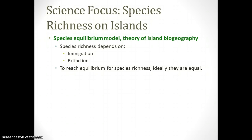You tend to see more extinction on islands because there is nowhere to move if situations get bad. Remember, if you are out-competed you have three options: adapt, move, or die. On an island, you don't have many options for moving, so extinction becomes much more likely. To reach equilibrium, the number of incomers and extinctions should balance out.